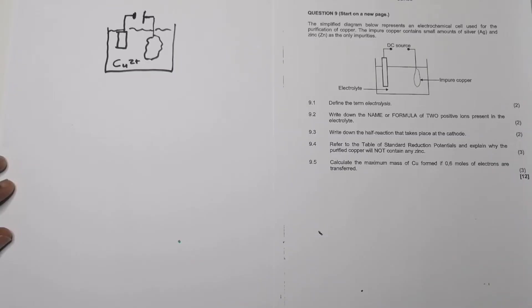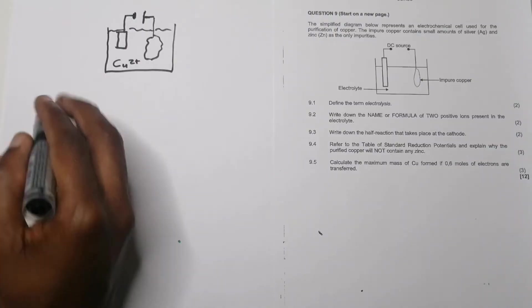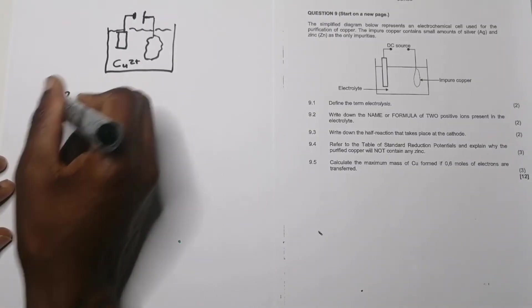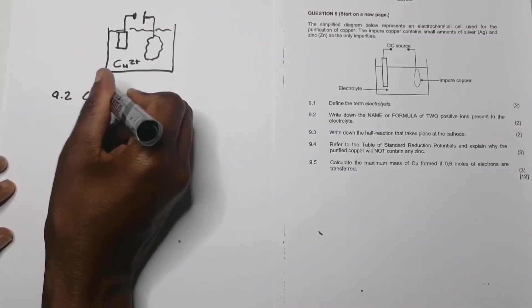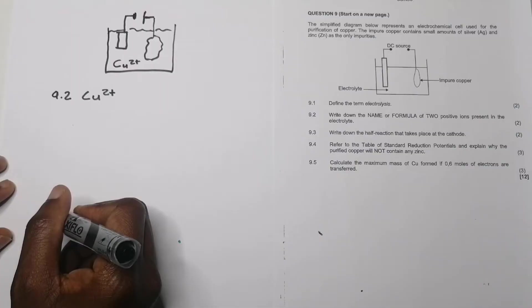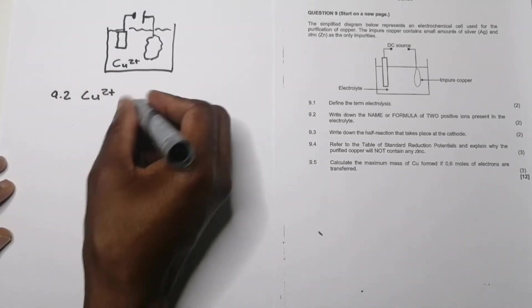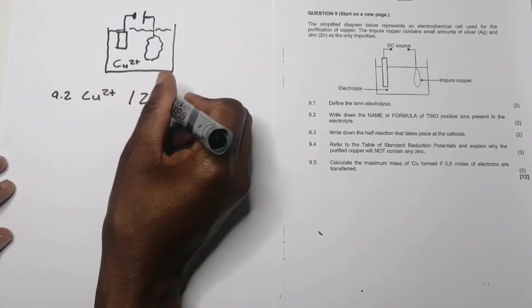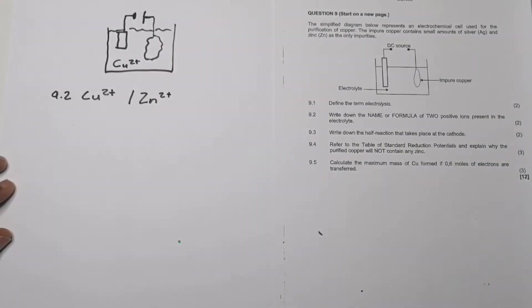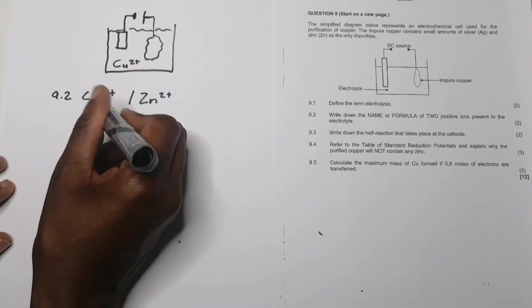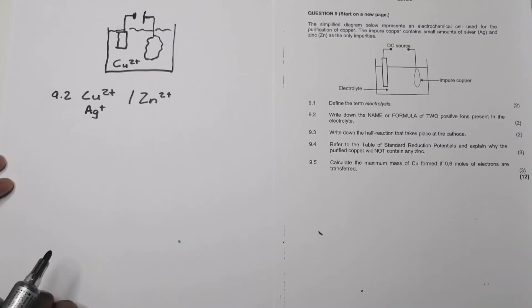Write down the name or formula of two positive ions present in the electrolyte. If you think about it, they told us we definitely have to have copper 2+ ions. But we also have zinc being present there, so we can also have zinc 2+ ions. And we also have silver, so Ag+. So those are the positive ions that you could have present there.